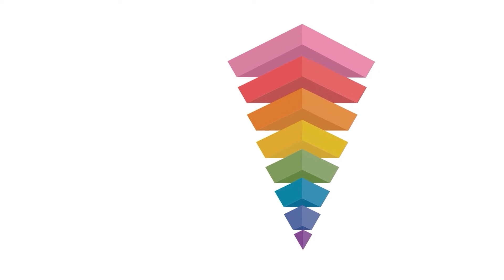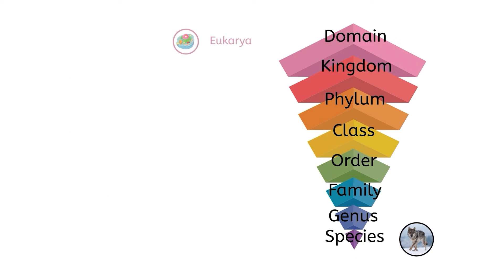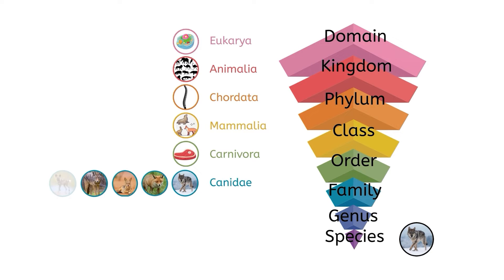To illustrate how this works, let's use this system to classify a gray wolf. A wolf is a eukaryote, which means it belongs in the domain eukarya, and it is an animal, which places it in the kingdom animalia. It has a spinal cord, which puts it in the phylum Chordata, and it also happens to have fur and produce milk, so it belongs in the class Mammalia. Wolves also eat meat, so they belong in the order Carnivora. Wolves belong to the family Canidae, which includes other organisms with shared traits such as foxes, jackals, coyotes, and wild dogs.